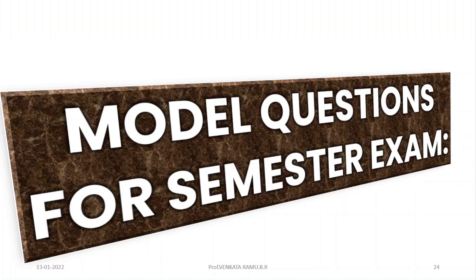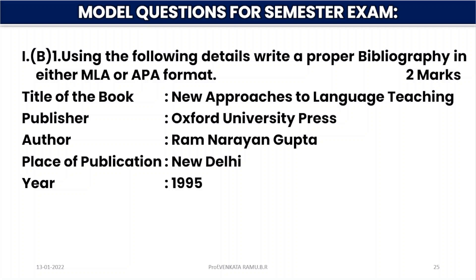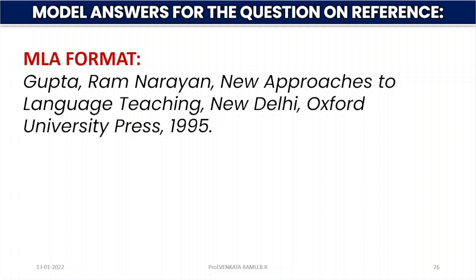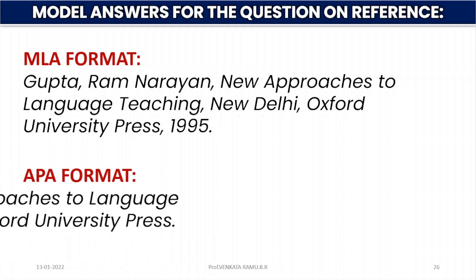Now let us move on to the model questions for the semester examination. The question reads: using the following details, write a proper bibliography in either MLA or APA format — two marks. Title: New Approach to Language Teaching. Publisher: Oxford University Press. Author: Ram Narayan Gupta. Place of publication: New Delhi. Year: 1995. In the MLA format: Gupta, Ram Narayan. New Approach to Language Teaching. New Delhi: Oxford University Press, 1995. In the APA format: Gupta (1995). New Approach to Language Teaching. New Delhi: Oxford University Press.